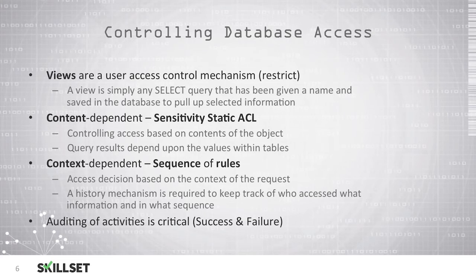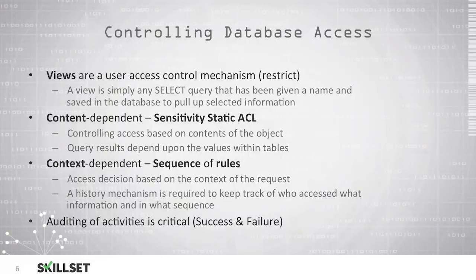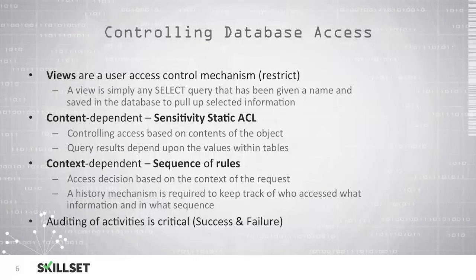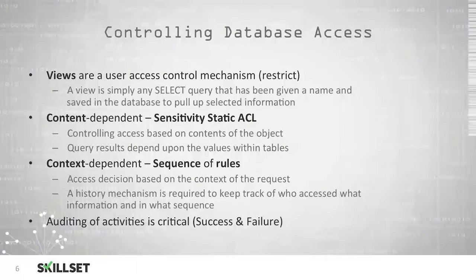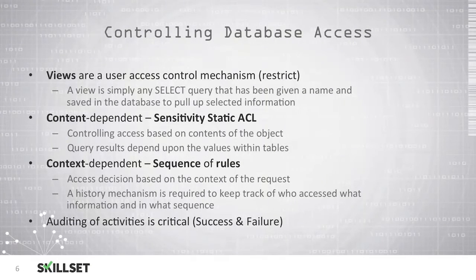Context-dependent database access is based on a sequence of rules where the computer can make decisions on whether or not to allow access based on the context of the request. For example, a user may be permitted to access several documents independently, but if the user begins accessing those documents in a short amount of time and in sequence, the system can disable that user's further access to sensitive information, because it can assume the user is trying to steal or access information they should not have. This has a history mechanism built in to track what information has been accessed by which user and in what sequence.